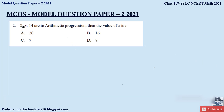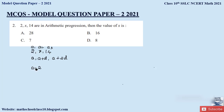Question 2: 2, x, 14 are in arithmetic progression. Find the value of x. We are given three terms A1, A2, A3. In the general form of an AP, the first term is A, second term is A + D, and third term is A + 2D. From the question, the first term A = 2 and the third term A + 2D = 14.